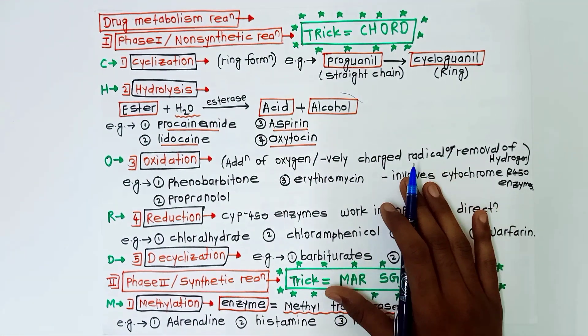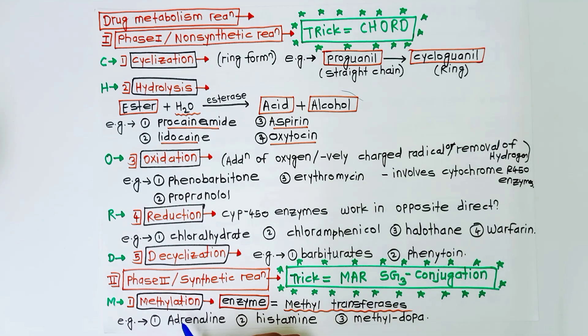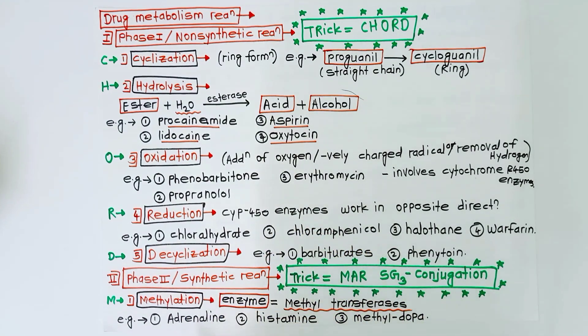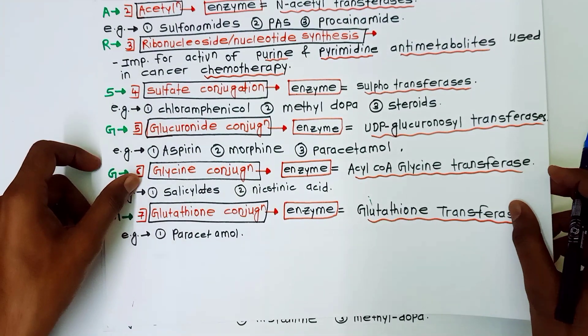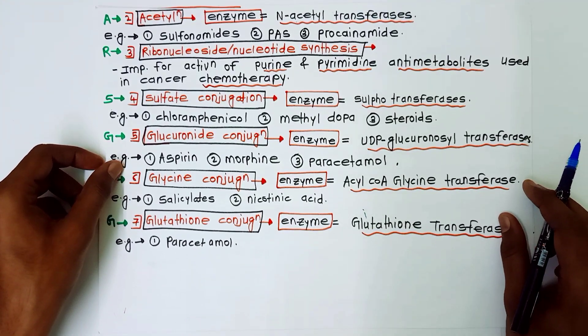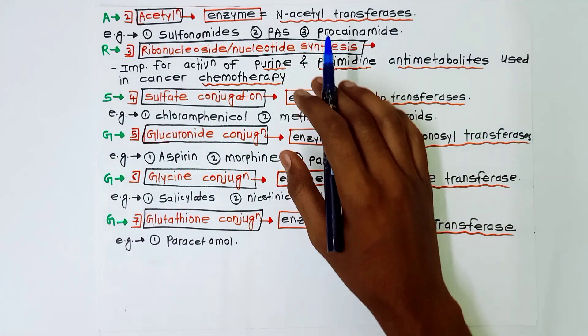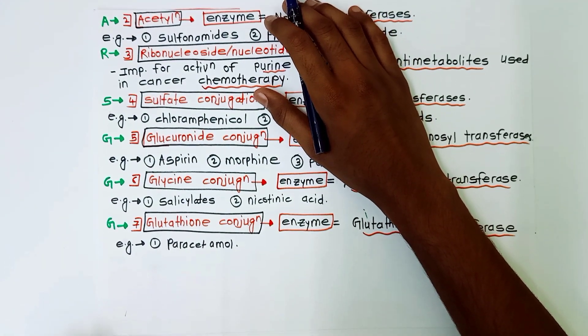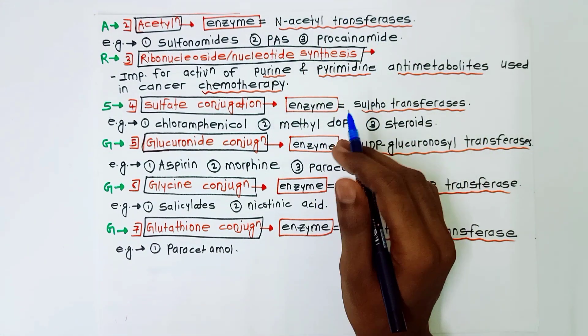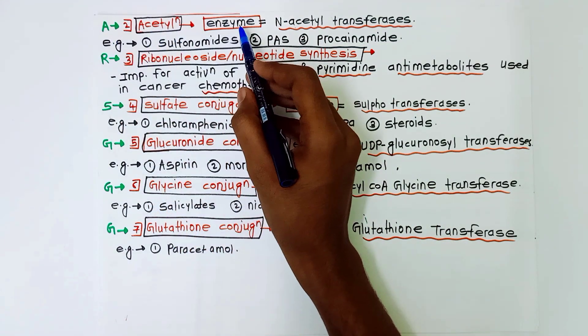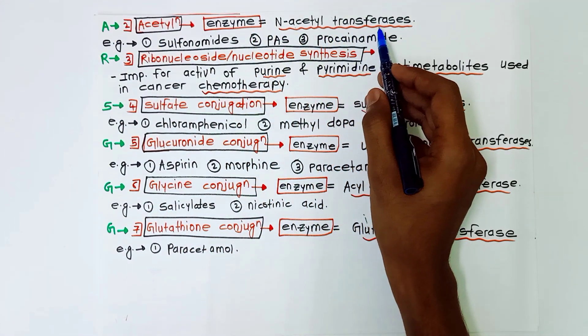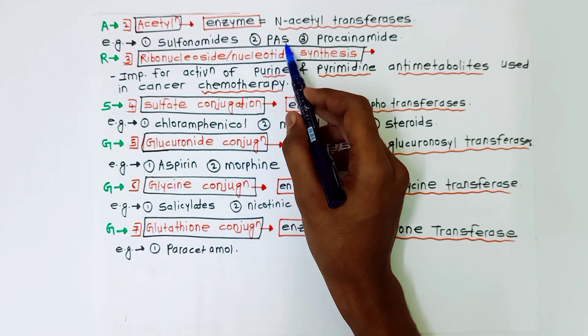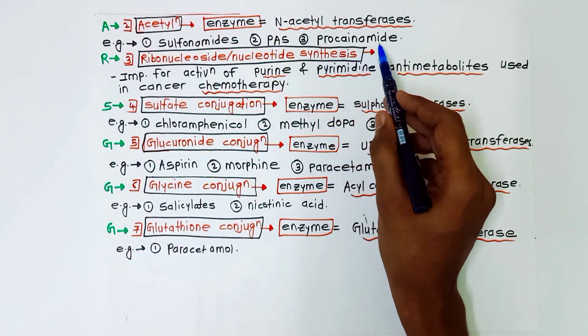First of all, we have phase 2 reaction methylation. The enzyme involved in this reaction is methyltransferases. Example is adrenaline, histamine, and methyl dopa. Next is A for acetylation. The enzyme involved is N-acetyltransferases. Example is sulfonamides, PAS (para-aminosalicylic acid), and procainamide.